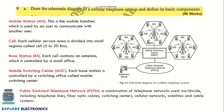The next question asks you to draw the schematic block diagram of a cellular telephone system and define its basic components. The diagram shows a mobile station connected to a base station, which connects to the MSC (Mobile Switching Center), which connects to the PSTN and stationary phones. Explain what a mobile station, cell, and base station are in one to two lines each. This carries six marks — the diagram is worth three to four marks.